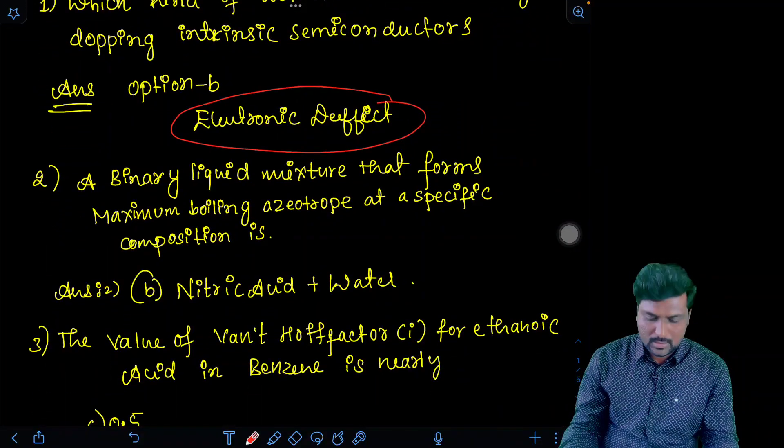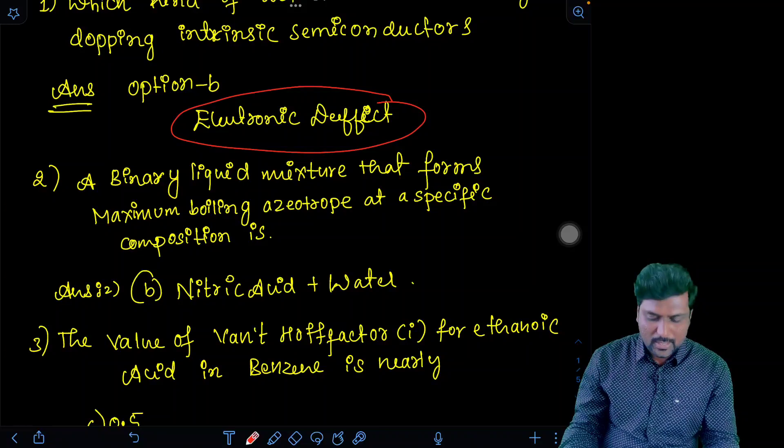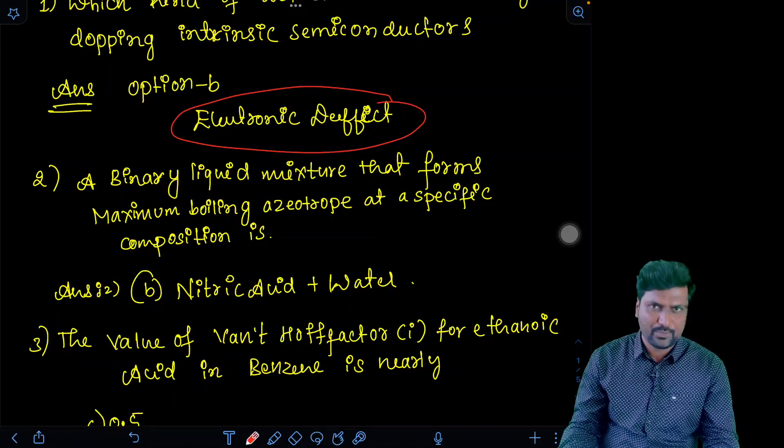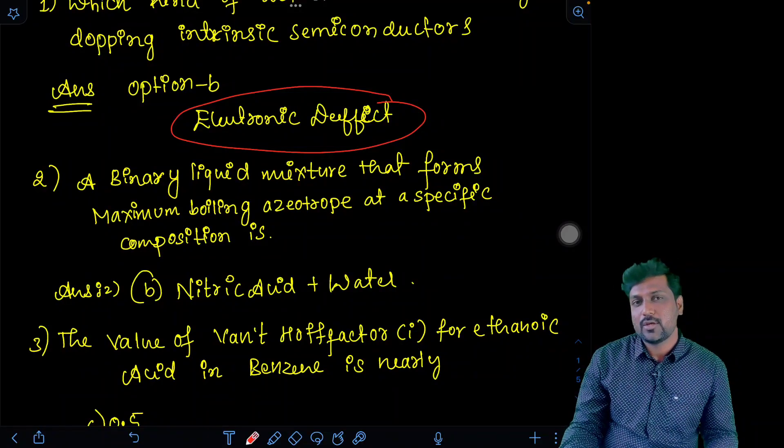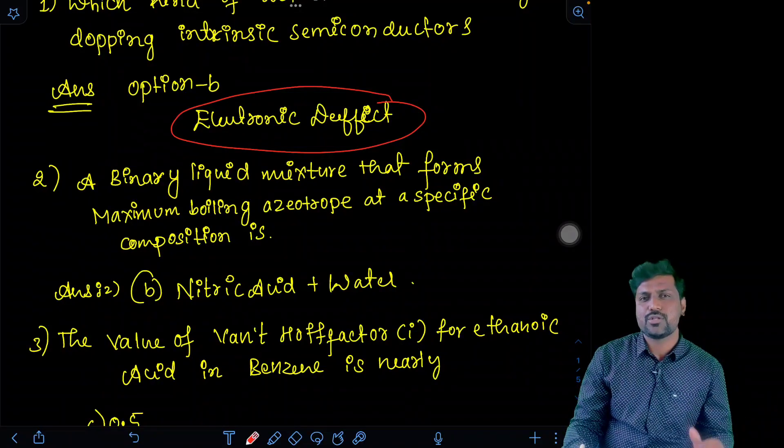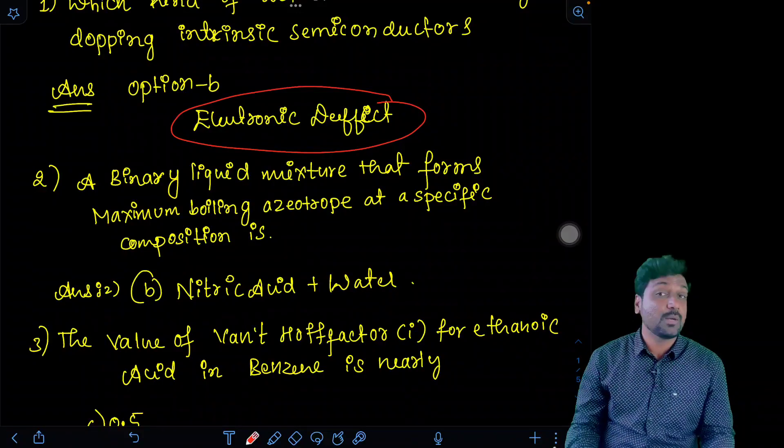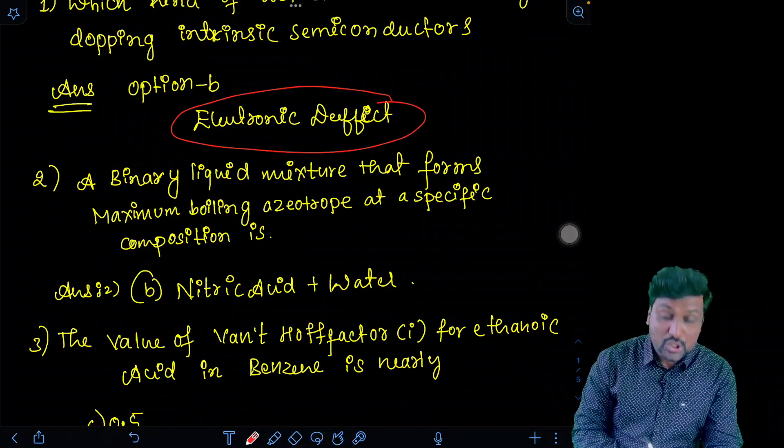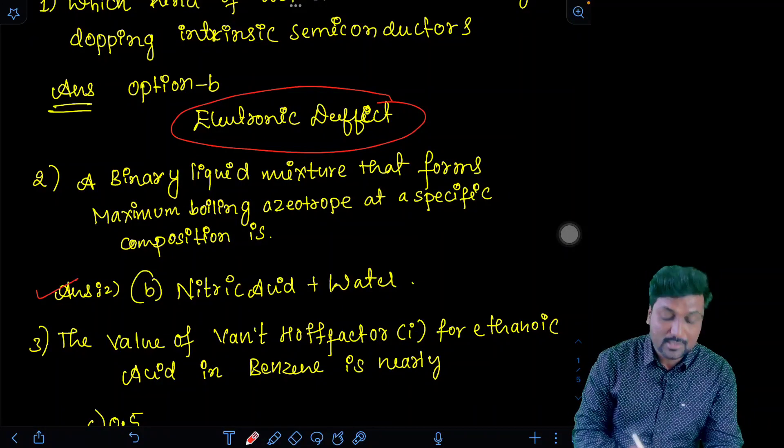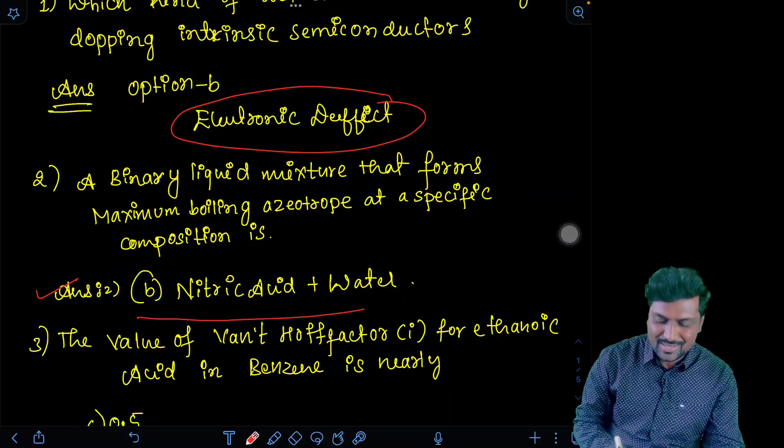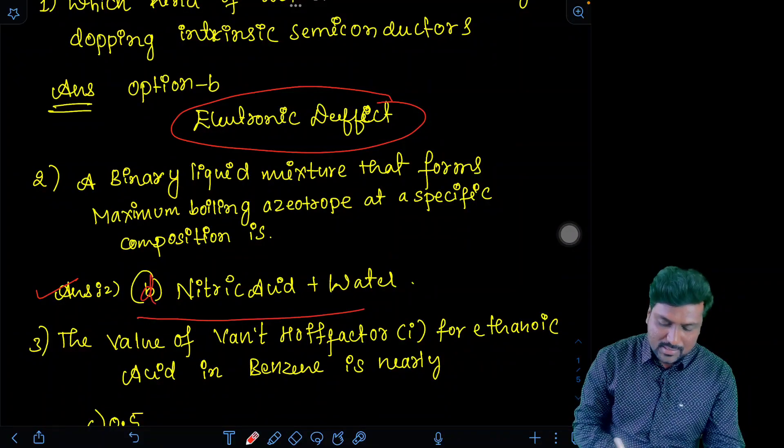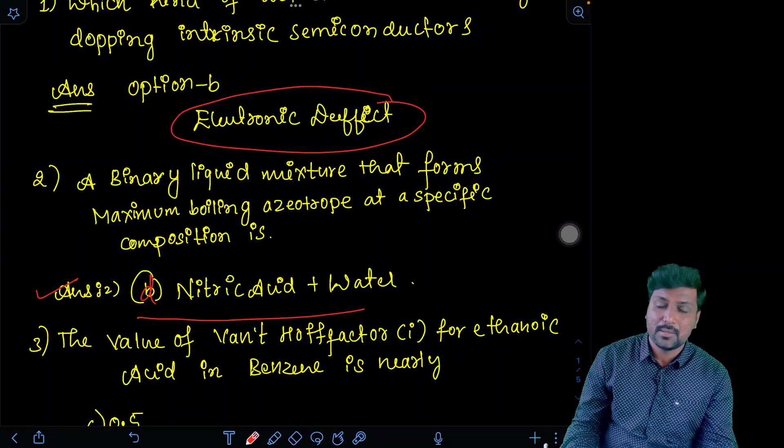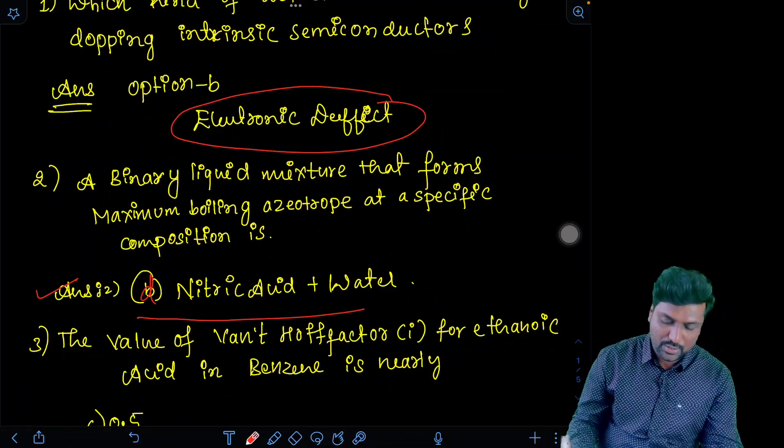Next, second question is chapter solution. A binary liquid mixture that forms maximum boiling azeotrope at specific composition. Azeotropes are the non-ideal solution either of positive deviation or negative deviation. He is asking maximum boiling azeotrope - negative deviation. Negative deviation from Raoult's law. Non-ideal solution showing negative deviation from Raoult's law. Answer is D, that is nitric acid plus water. HNO3 plus water.